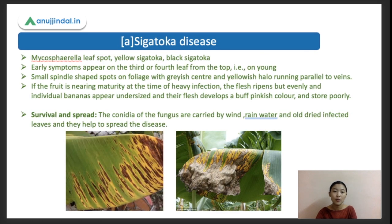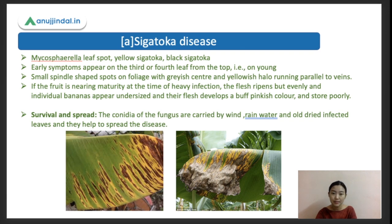Sigatoka disease is caused by Mycosphaerella species and is also known as Mycosphaerella leaf spot, yellow Sigatoka, or black Sigatoka. The early symptoms can be seen on the third or fourth leaf from the top - the topmost leaves won't be affected. The first symptoms appear on young leaves: small spindle-shaped spots on foliage with a gray center and a yellowish halo around them running along the parallel veins.